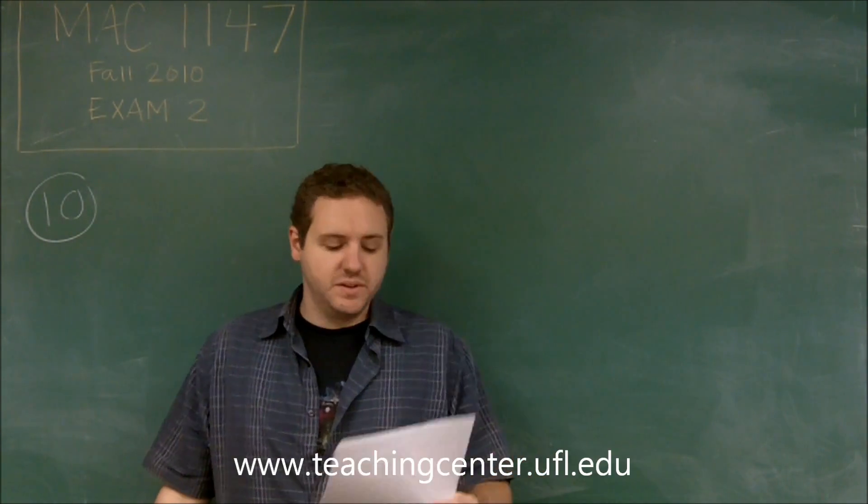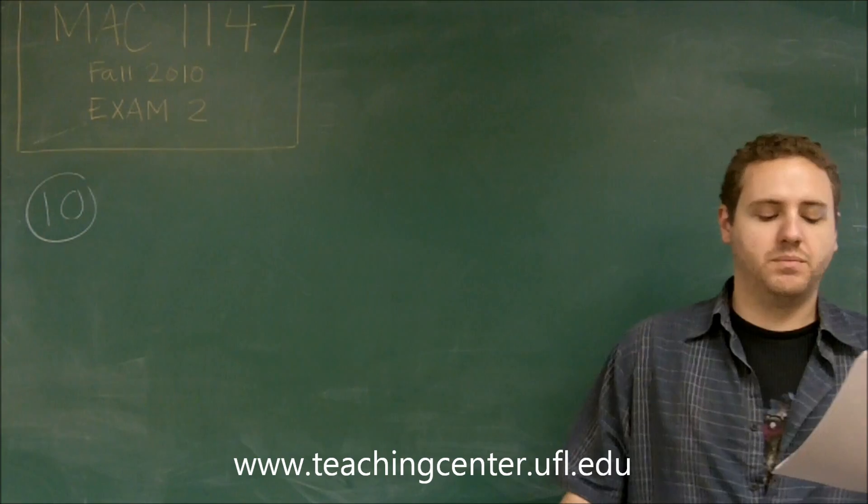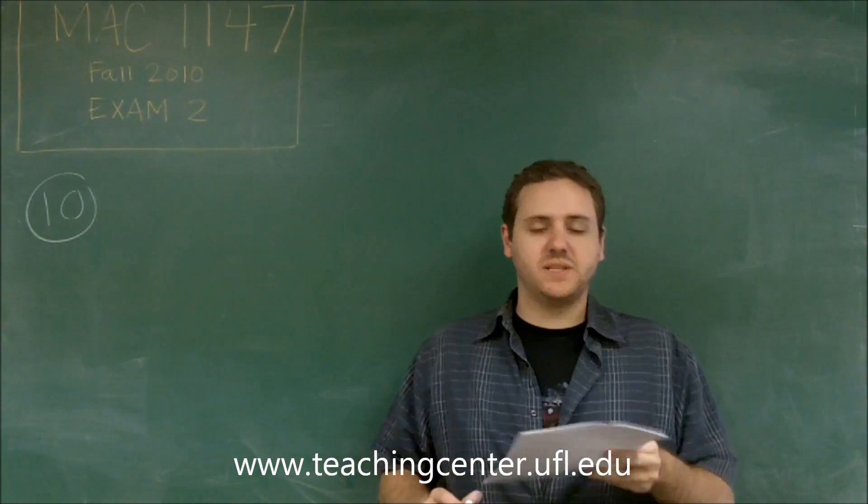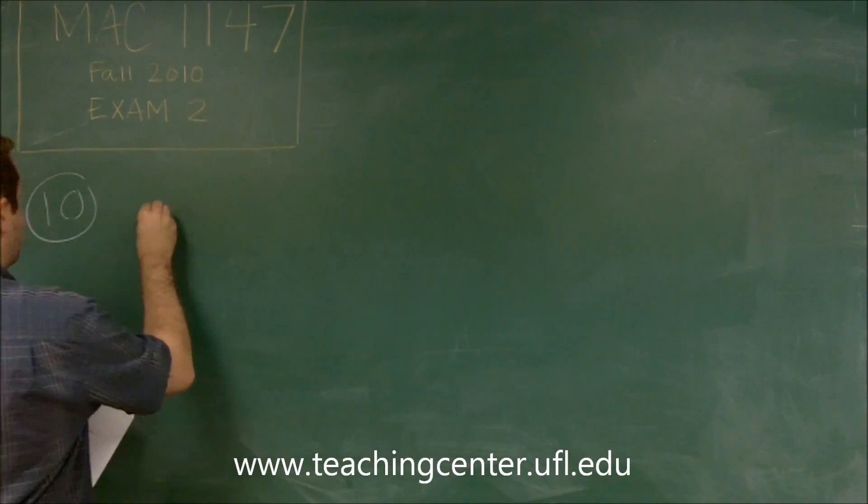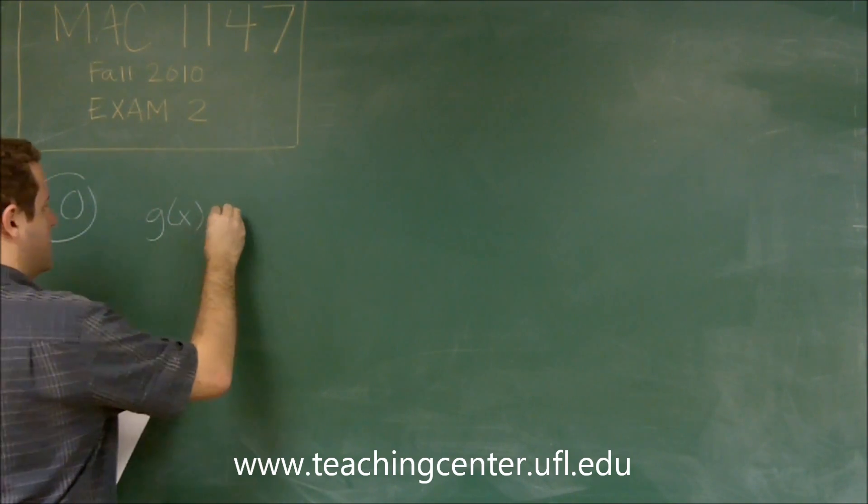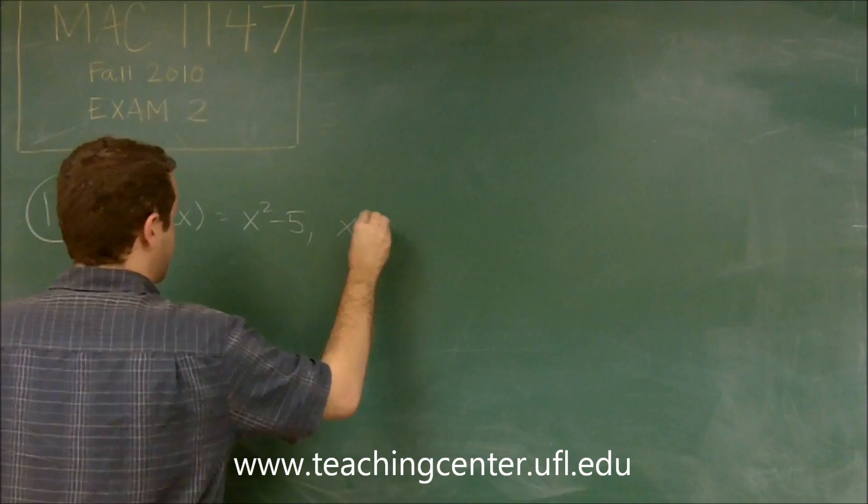For number 10, we're given two functions, f and g, and we're asked to find f composed with g inverse of 4. So the first thing we want to do here is find g inverse. So g of x is given to us in the problem as equal to x squared minus 5 if x is less than or equal to 0.